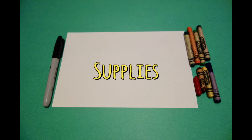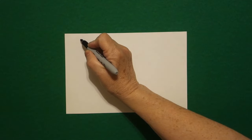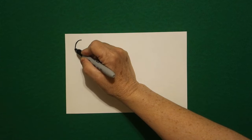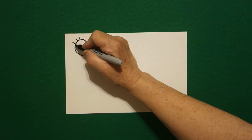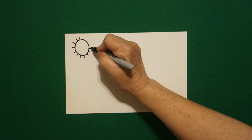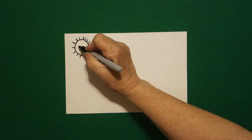Let's draw. Today's project is how to draw a food chain. I'm going to come over here on the upper left corner and put a dot. From that dot, I'm going to draw a circle, then put straight lines all the way around, because the very first part of our food chain starts with the sun.